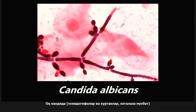This next one is an example of candida albicans. In this picture, we are seeing the pseudohyphae as well as the budding yeasts. It's important to know that because this is occurring at 20 degrees Celsius.